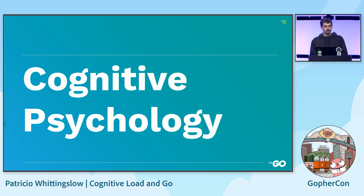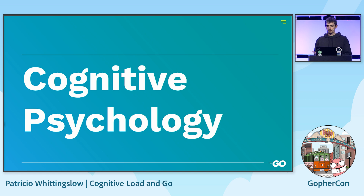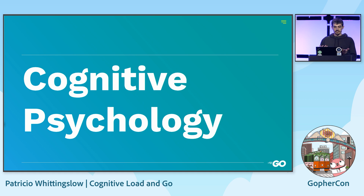Those in the field, called cognitive psychologists, investigate the processes in the brain related to learning, understanding, and problem solving. This is important to us all as programmers because if we can understand why code is hard to read or understand, then we can take action to reduce the cognitive load and avoid bugs, and have a better team building experience of the software as a team.